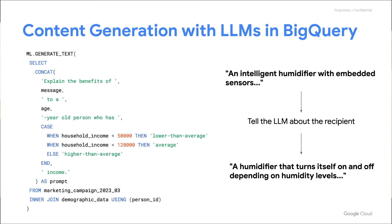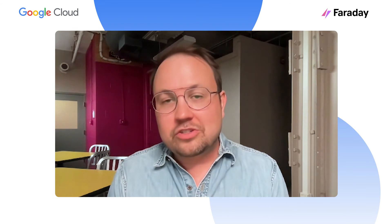Once we tried it in BigQuery's LLM, we found a couple of different advantages. The first was we were able to very simply express our combination of demographic data with the prompt. We also found that the LLM — BARD, or its Google Cloud equivalent — really understood what we were trying to do. So when we gave it a prompt describing a humidifier that the company itself described as an intelligent humidifier with embedded sensors, the LLM was able to re-describe that product in terms that somebody who doesn't know what embedded sensors are would understand. What it came up with was: a humidifier that turns itself on and off based on how humid it is in your room.